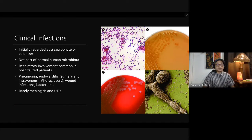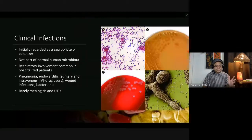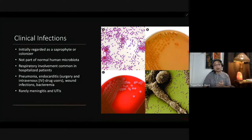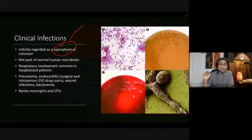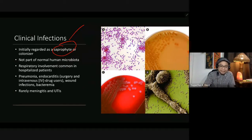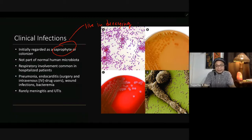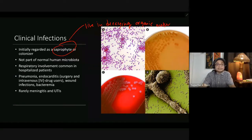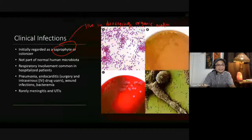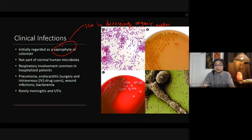Stenotrophomonas maltophilia was initially regarded as a saprophyte or colonizer — meaning it can live in decaying organic matter and is not part of human microbiota. Respiratory involvement is common in hospitalized patients. It can cause pneumonia, endocarditis as a result of surgery and IV drug use, wound infections, and bacteremia. It can rarely cause meningitis and UTIs.